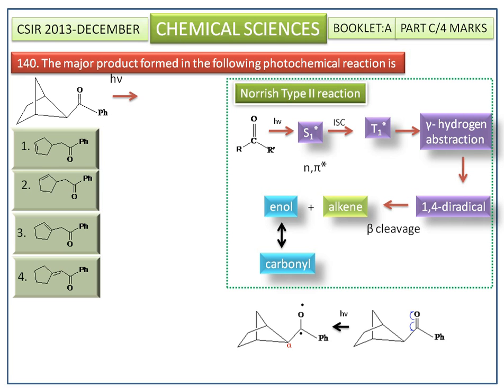This is the alpha carbon, this is the beta carbon, and this is the gamma carbon. It has two hydrogens — that is, the gamma hydrogens. One of the gamma hydrogen atoms is suitably positioned to form a six-membered cyclic transition state.